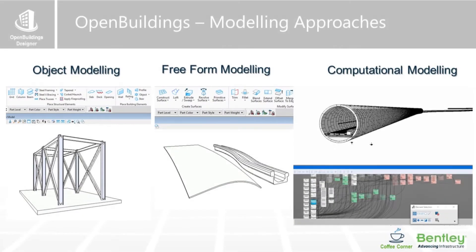I want to start with some basic information, then talk about the data group system itself, and then some exploits we can do once we've got the data group system up and running for us.